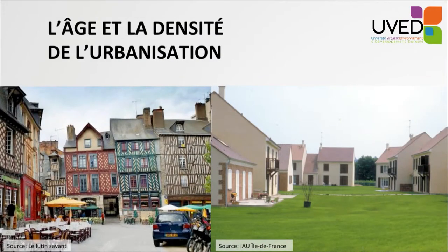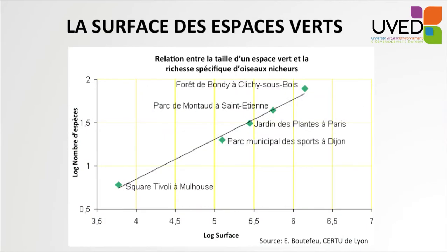Age and the density of urbanization have an impact on biodiversity in town. Here we have a town center with very few plant species, as opposed to a more recent type of building with more green spaces, and obviously biodiversity will be greater in the latter. The total area of green spaces is also very important. The curve shows how many species of birds can be found in green spaces, and in the largest areas there is the greatest number of species.